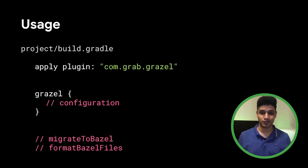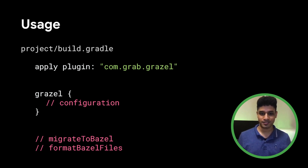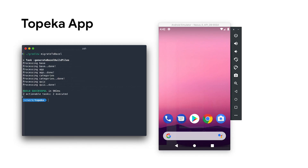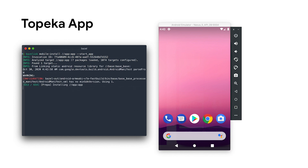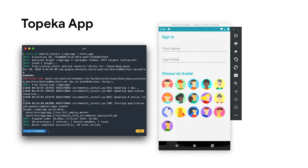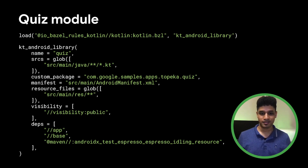Now let's see how the plugin can be used. In the root build.gradle file, we can apply the plugin with the given coordinates and then configure Grazel with a couple of things like rules version, etc. Doing so will add a couple of tasks to the project, such as migrate to Bazel and format Bazel files. Now let's take a quick demo on Google's Topeka sample application, which is a Kotlin-based multimodule project. Running the migrate to Bazel task would generate all Bazel build scripts, and then we can even run the app using Bazel mobile install, which is a neat way to run incremental builds. Here in the generated build script for the quiz module, we can see that Grazel is able to infer various things like package names, Kotlin library, and dependencies. The same goes for other modules as well.